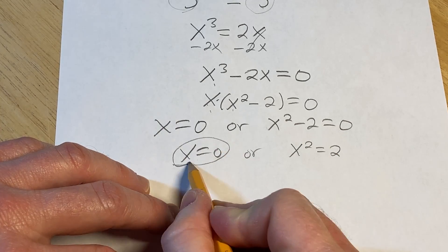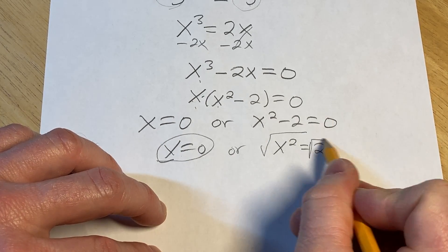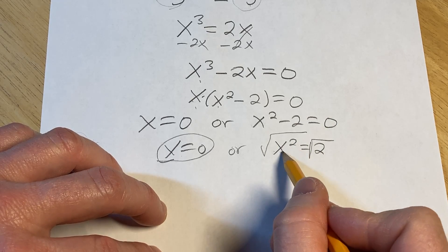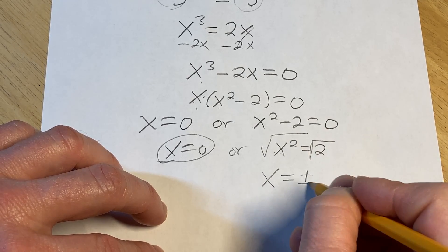This is pretty much done, and then to solve this, we can take the square root of both sides. Whenever we do that, because we're taking the square root of x squared, we do get a plus or minus. So we get x equals plus or minus the square root of 2.